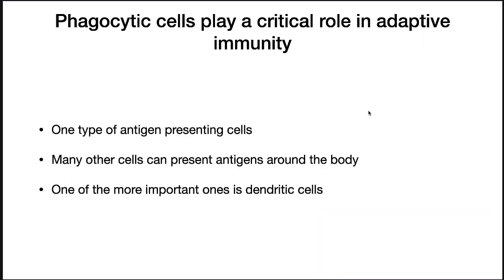Phagocytic cells play a critical role in adaptive immunity. Not only are their reactions enhanced by the products of adaptive immunity, they are one type of antigen presenting cell. However, there are many other cells that can present antigens around the body, and we'll get into that in just a second.